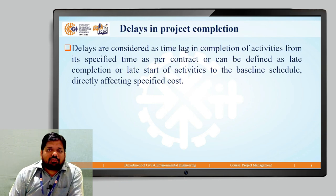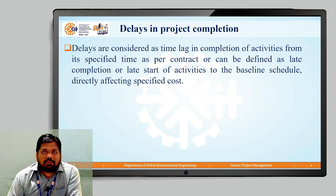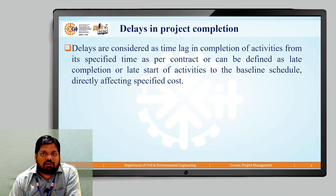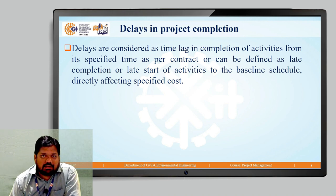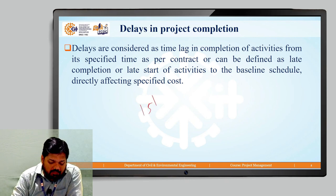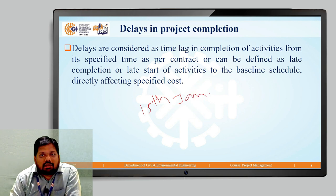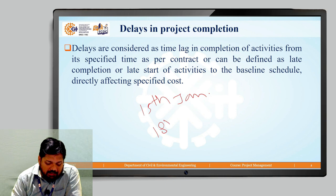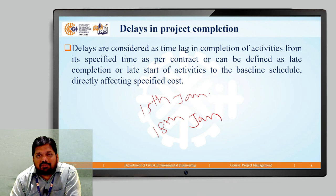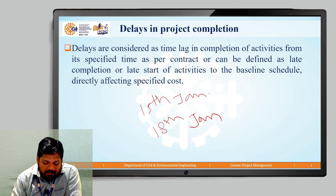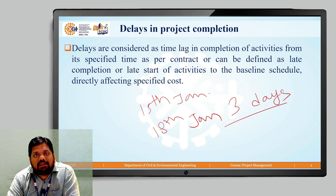So, what is a delay? In general, we know what the meaning of delay is — it is the late completion of a particular activity. Suppose I want to complete a certain task by the 15th of January, and instead of completing it on the 15th of January, I complete the activity on the 18th of January. So that we call a delay of three days.